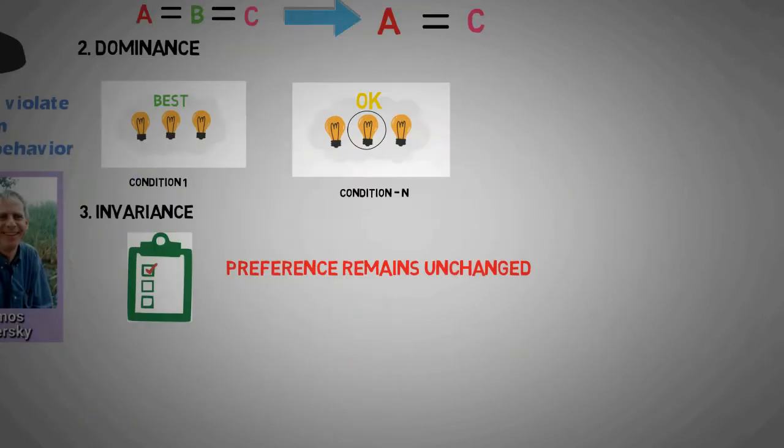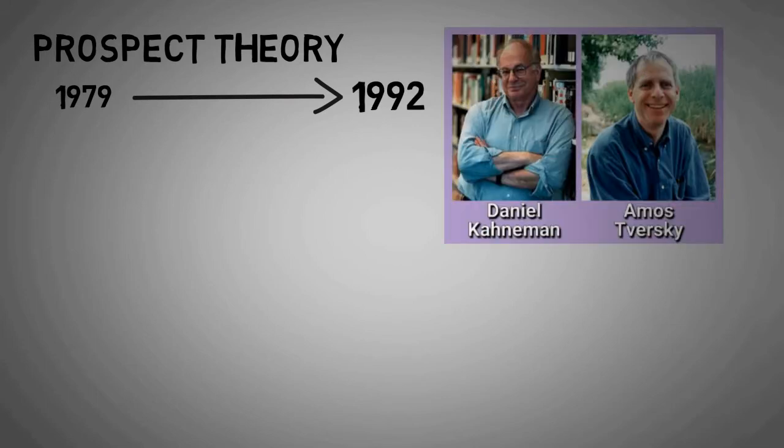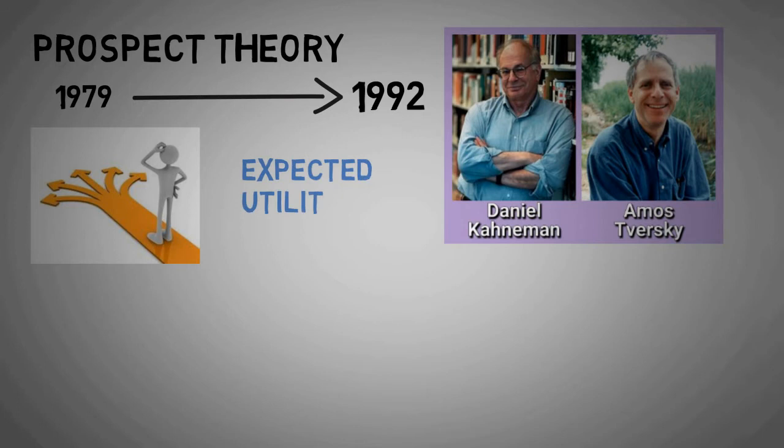This is what Kahneman and Tversky gave as major finding of prospect theory. Prospect theory was formulated in 1979 and further developed in 1992 by Amos Tversky and Daniel Kahneman, deeming it more psychologically accurate of how decisions are made when compared to the expected utility theory.